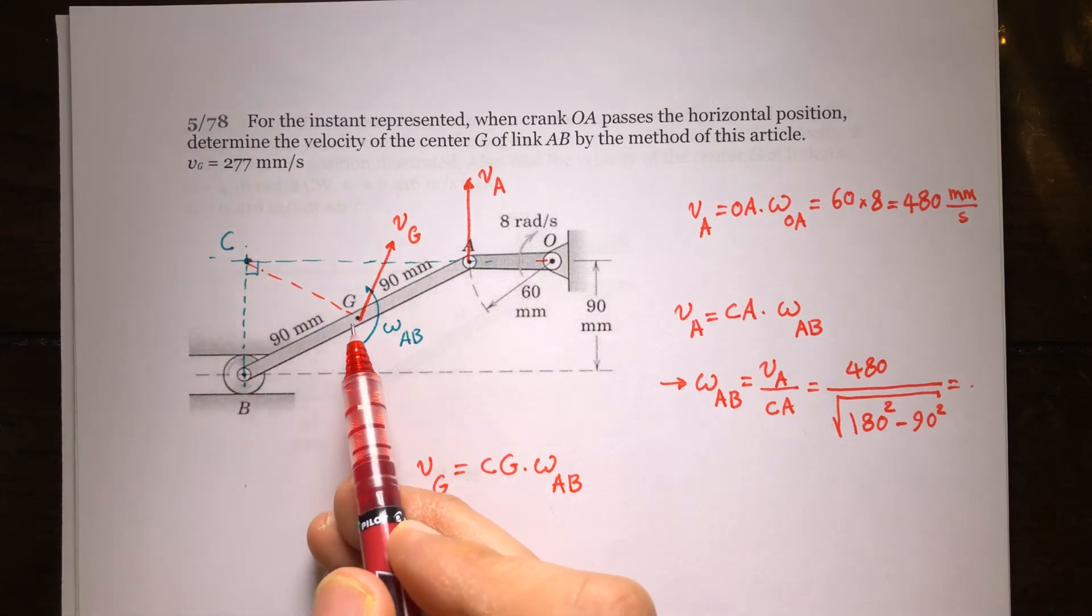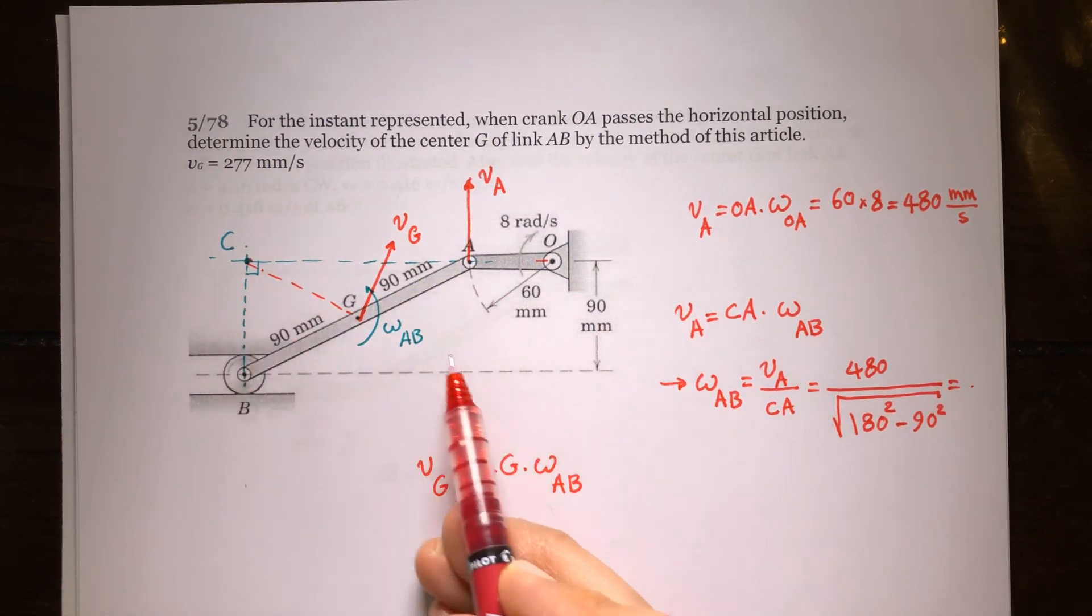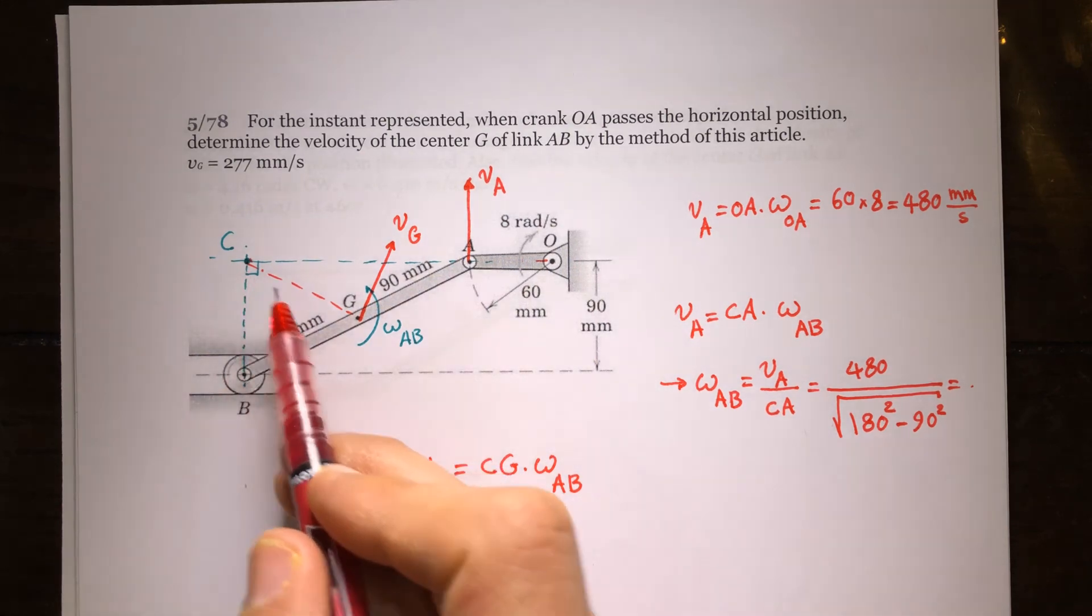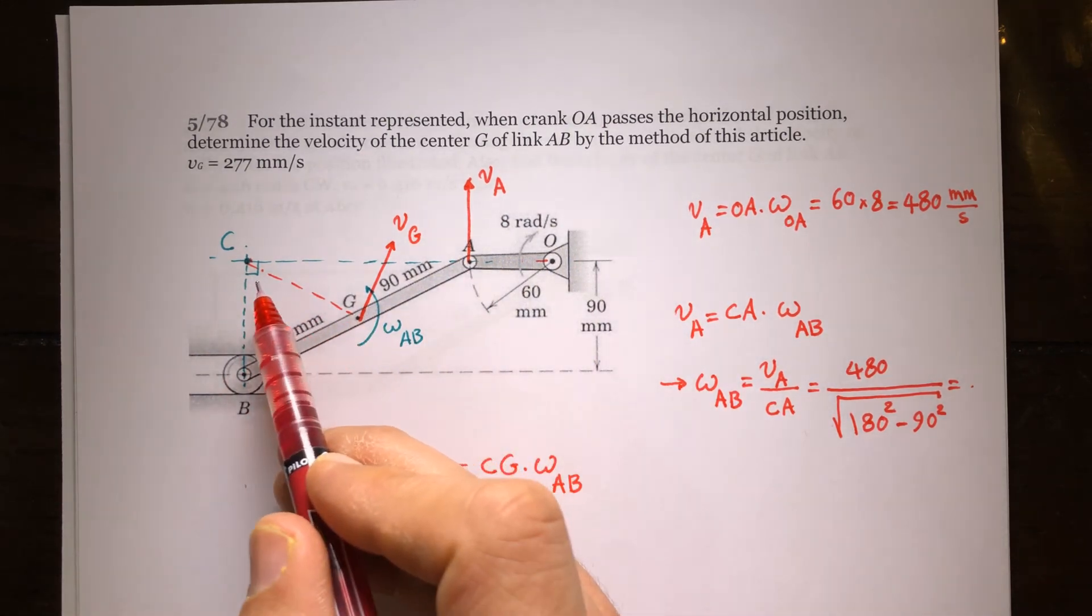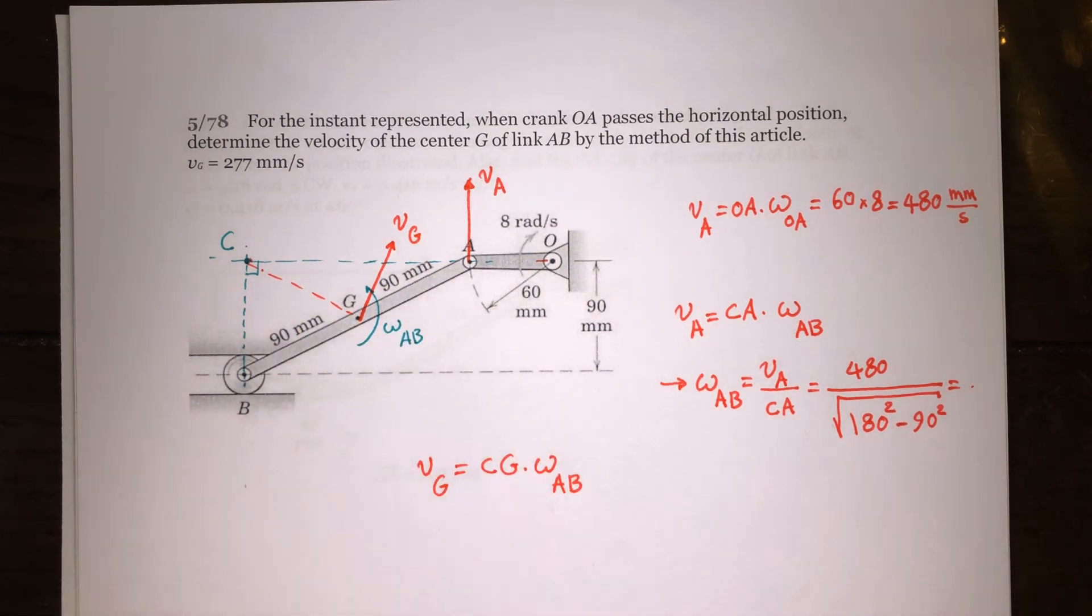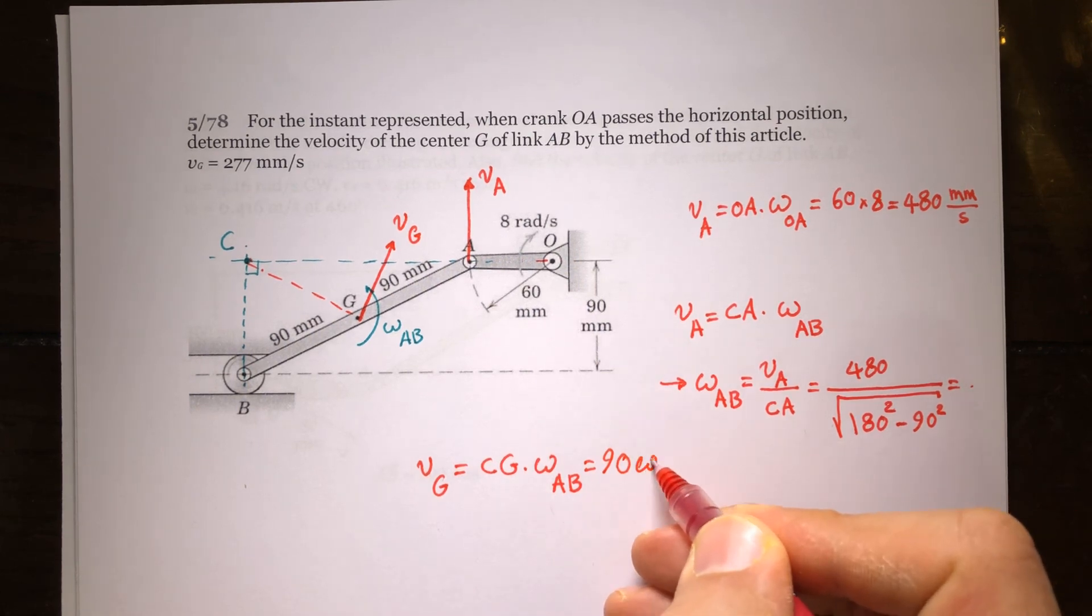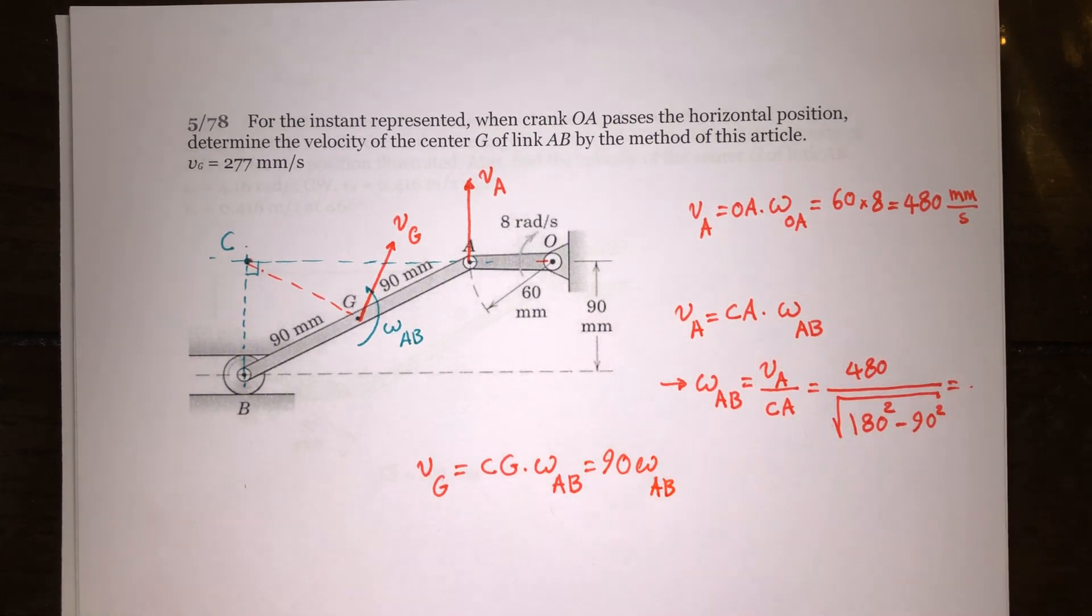And CG is simply equal to 90. This is a rectangle, and these are the diagonals of it, so they bisect each other and you're going to have all equal lines. So CG equals 90 times omega AB, which you can find from this equation.